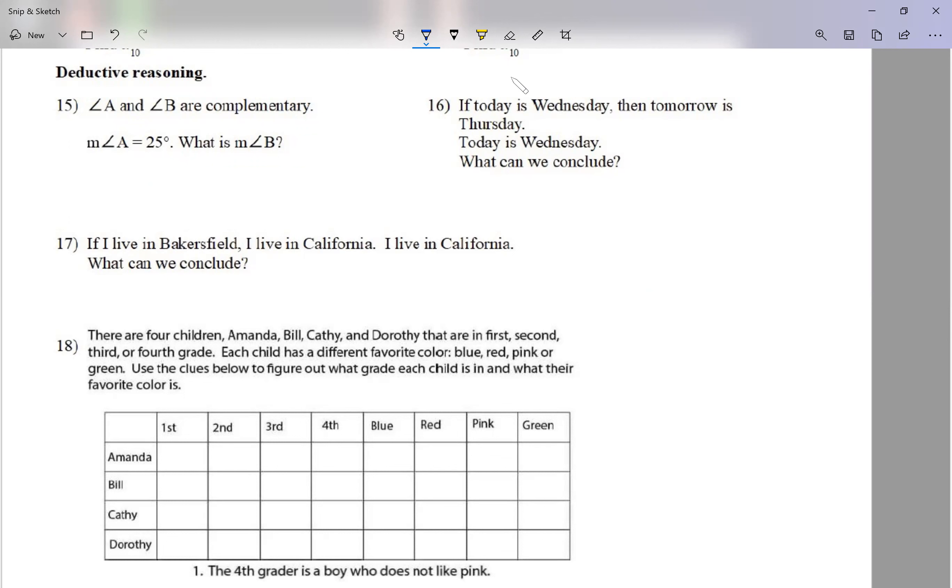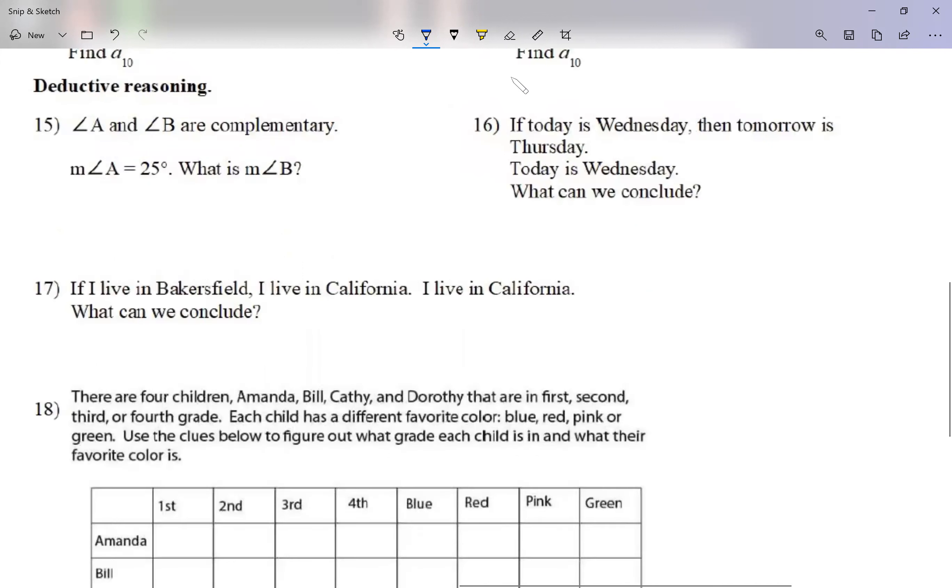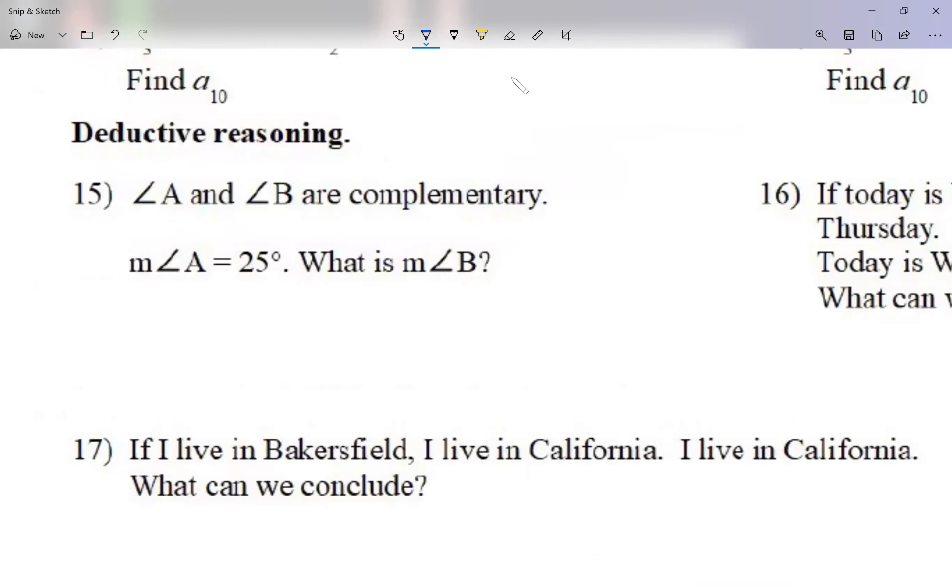Like, for example, let's take a look at number 15. To have deductive reasoning, I said angles A and angle B are complementary. I gotta remember what complementary means: complementary means they add up to 90. The measurement of angle A is 25, so what is the measurement of angle B? For right now, I don't...